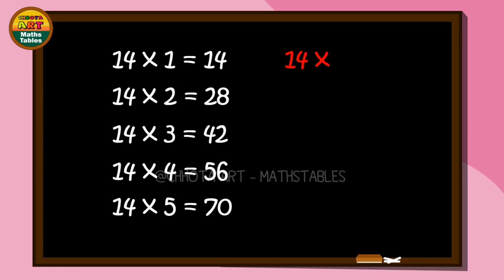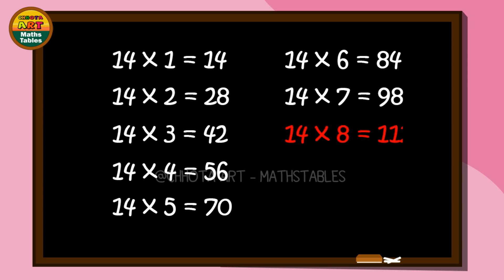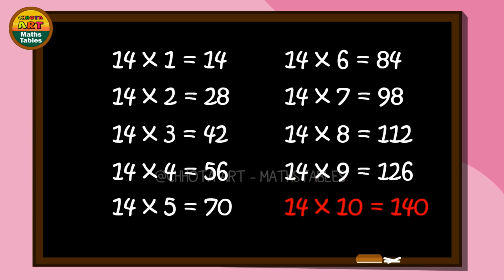14 sixes are 84. 14 sixes are 84. 14 sevens are 98. 14 sevens are 98. 14 eights are 112. 14 eights are 112. 14 nines are 126. 14 nines are 126. 14 tens are 140. 14 tens are 140.